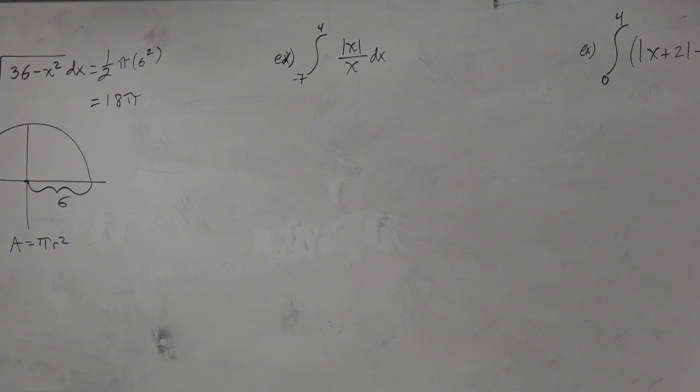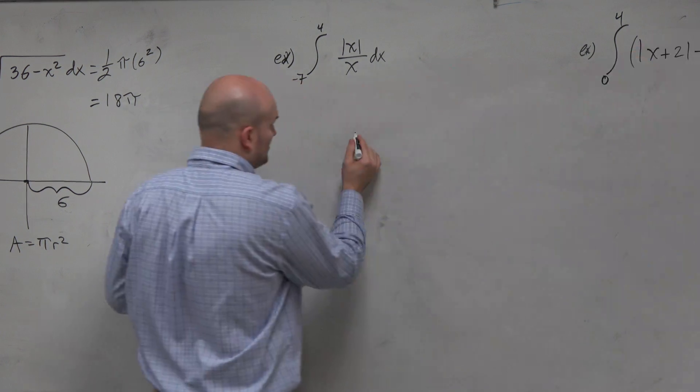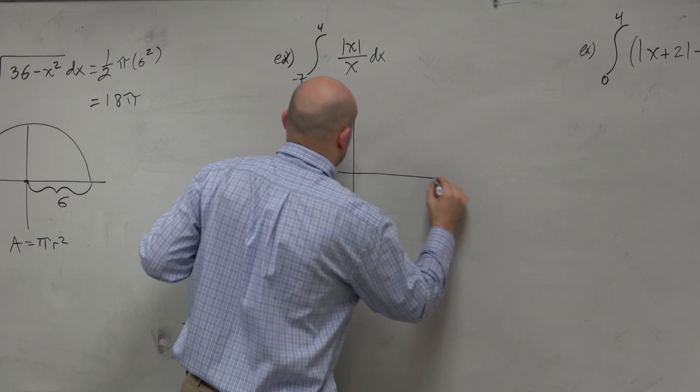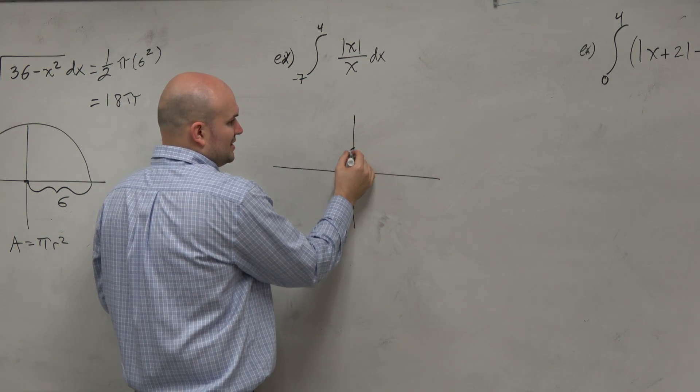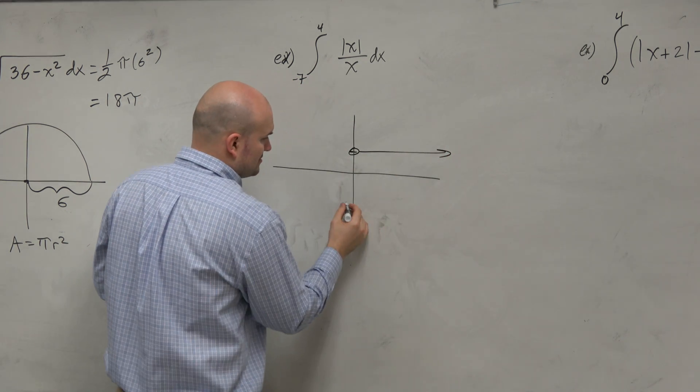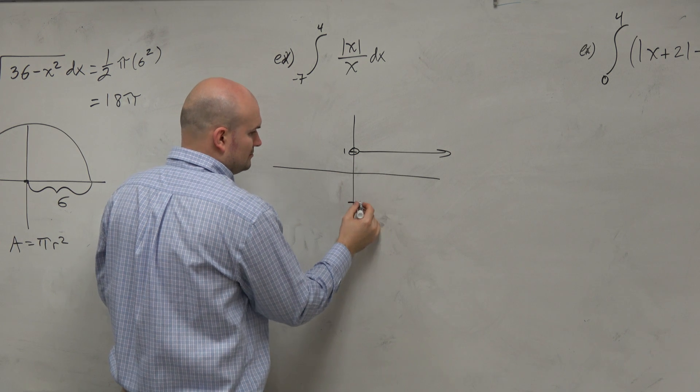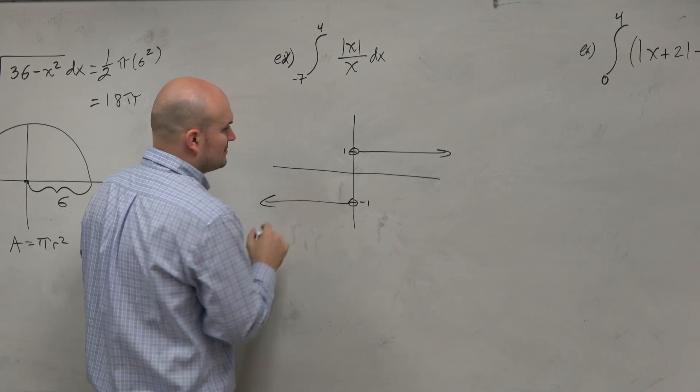Actually, this is a pretty decent problem. Because I remember from limits that this function basically has 1, goes like that. Negative 1, goes like that.